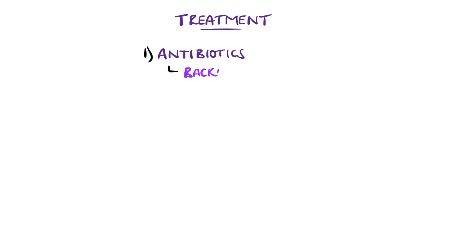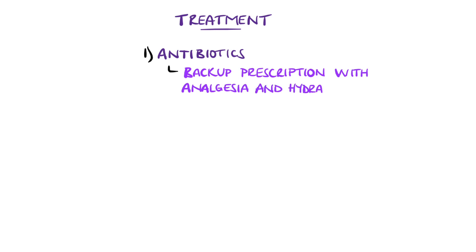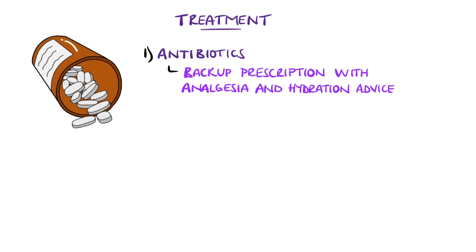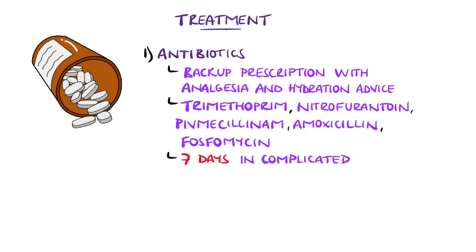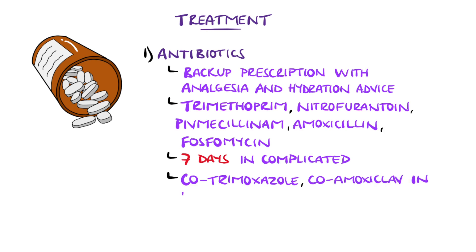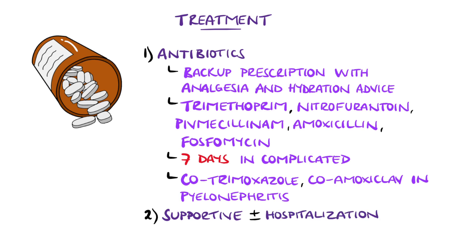The treatment generally involves antibiotics. However, in some cases of mild, uncomplicated UTI, patients may be treated conservatively without antibiotics, or with a backup prescription, with supportive advice such as hydration and analgesia. Trimethoprim, nitrofurantoin, pivmecillinam, amoxicillin, and fosfomycin are common agents. In complicated cases, it's common to have slightly longer durations of therapy, with seven-day courses being used commonly. Cases of pyelonephritis also require antibiotic treatment, such as co-trimoxazole or co-amoxiclav, and are more likely to require admission and supportive care.